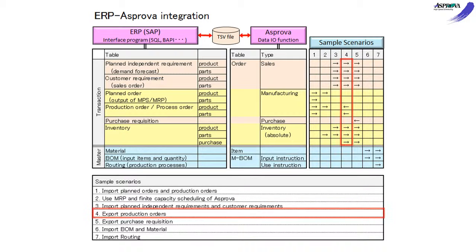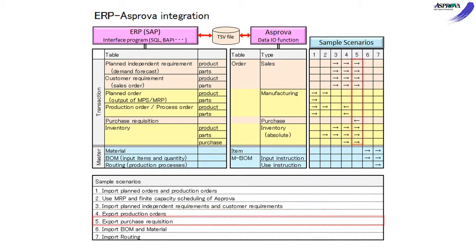Scenario 4: Export the production orders. Scenario 5: Export the purchase requisition.